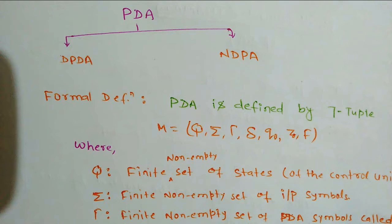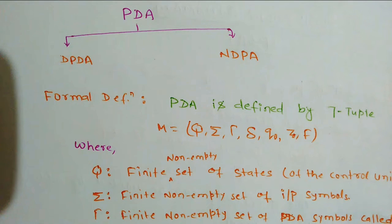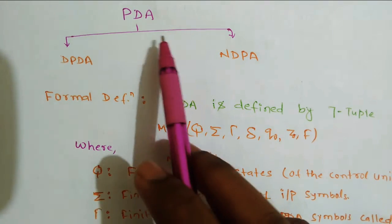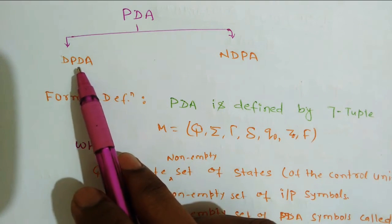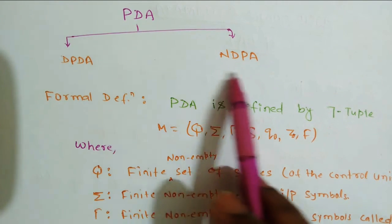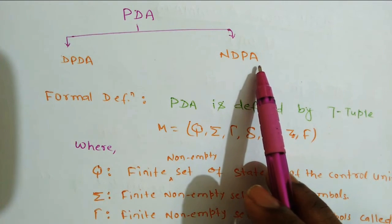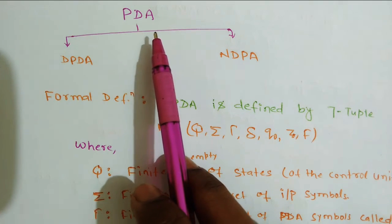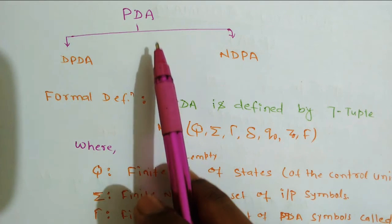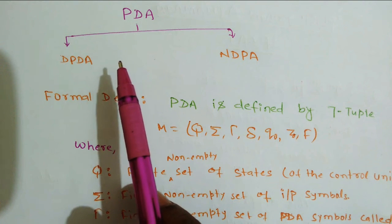Welcome everyone. In this video lecture we are going to define PDA by seven tuples and we will have an example also. First, we have categorized PDA into two different types: deterministic pushdown automata and non-deterministic pushdown automata. This is similar to finite state machines, in which we discussed deterministic finite state machine and non-deterministic finite machine.